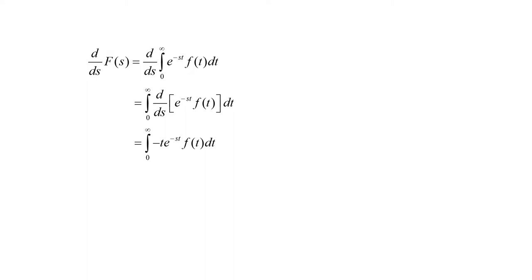We'll regroup that a little bit and pull the negative sign outside. So this will be negative times the integral from zero to infinity of e to the negative st times t times f(t) dt. And this, by definition, is going to be the negative Laplace transform of t times f(t).